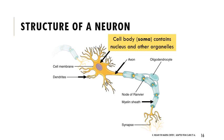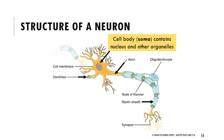The soma contains the full cell body, nucleus, and organelles. The processes - extensions from the cell body - can be the axon or the dendrites. In anatomy, a process is an extension or something that sticks out. In physiology, a process refers to a mechanism or series of events. Here, a process means something that sticks out - that could be the axon or the dendrites.